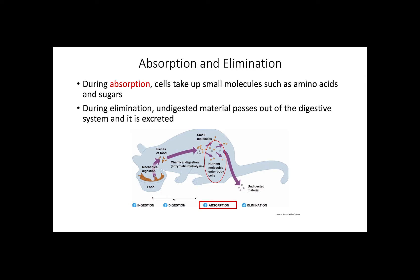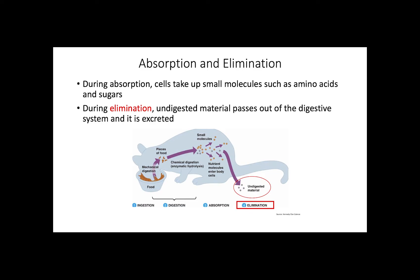Absorption is simply the take-up of small molecules, such as amino acids and sugars. Absorption is usually coupled with distribution as well, where nutrients are taken up inside cells while also moving throughout the body. Finally, elimination is the excretion of undigested material or waste that passes out of the digestive system.